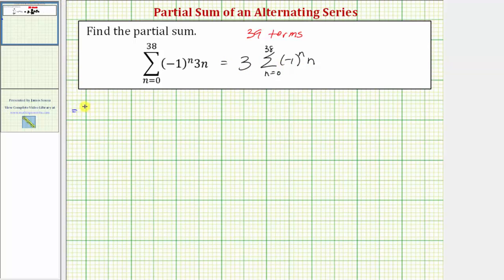So this would be equal to three times the quantity: when n equals zero we just have negative one to the zero times zero, plus when n is one we have negative one to the first times one, plus when n is two we have negative one to the second times two, when n is three we have plus negative one to the third times three, plus when n is four we have negative one to the fourth times four. Now of course the series continues.